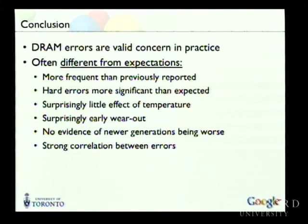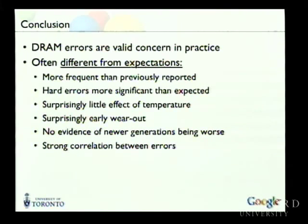What's interesting to note is that a lot of these observations hold also for other types of errors — disk errors, latent sector errors, total disk failures, data corruption. In almost every case, if you compare what you see in the field with what people have previously reported, it looks very different: the rates are higher, the statistical properties look different. So really for any type of reliability work, what you want to do is have more field data publicly available, analyze it, and base your work on the results from field data rather than on hypothetical assumptions.